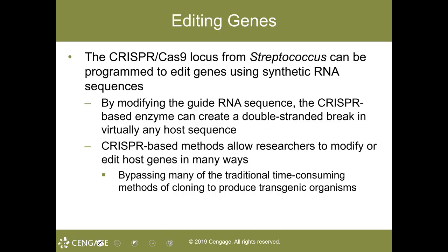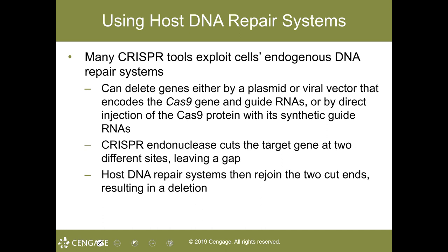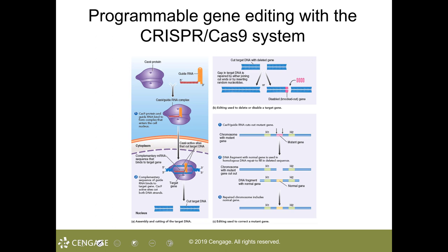CRISPR-Cas9 can edit DNA in living organisms. The Cas9-guide RNA can be used to cut out a mutant gene, and once that has been done, repair the chromosome with the normal gene. Cells of most species have systems that can detect and repair breaks in DNA using homologous DNA repair, and CRISPR-Cas9 exploits this ability. This is going to change the entire world.